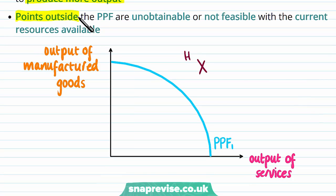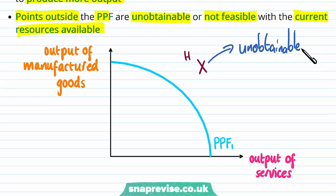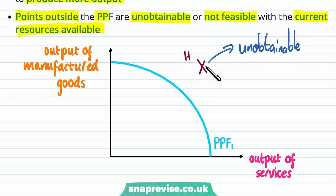Any points outside of the PPF curve — such as point H — are unobtainable or unfeasible with the current resources available. The PPF curve is essentially a pathway to understanding all of what we can do within an economy; we can't do anything more than this given the resources we have. Point H is simply not feasible because we don't have enough resources to produce that many services and manufactured goods at any given time. The curve represents the selection of different bundles or combinations of services and manufactured goods we can produce, and H is beyond that — we will never be able to produce that in any case.